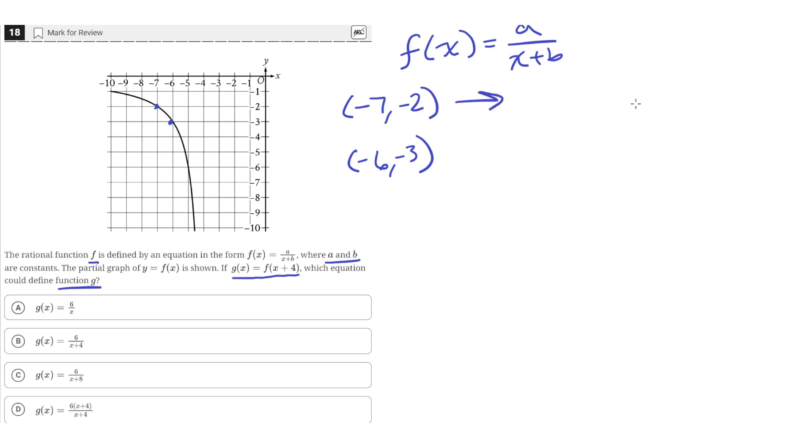At negative 7, negative 2, f(x) is equal to negative 2. Then we have a over the x value, which is negative 7 plus b. That's one equation. Our next equation is f(x) equals negative 3, which equals a over negative 6 plus b. We just took this equation and plugged in these two points. Now we have two equations and two unknowns, so we can solve for the values of a and b.